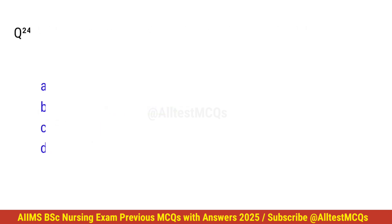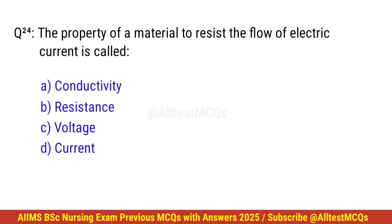Question number 24. The property of a material to resist the flow of electric current is called? Correct option is B. Resistance.